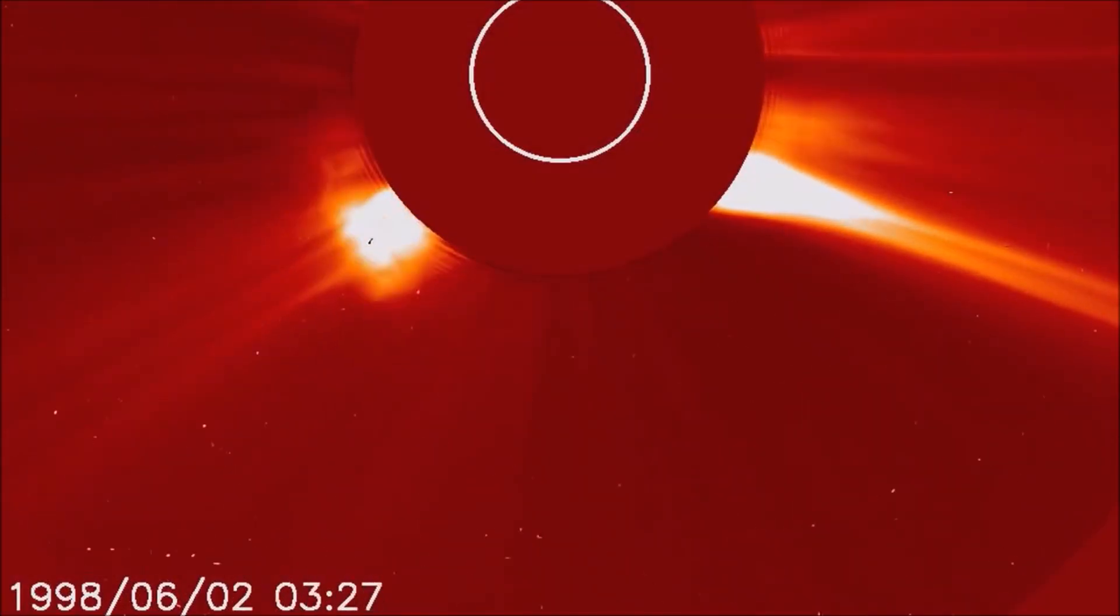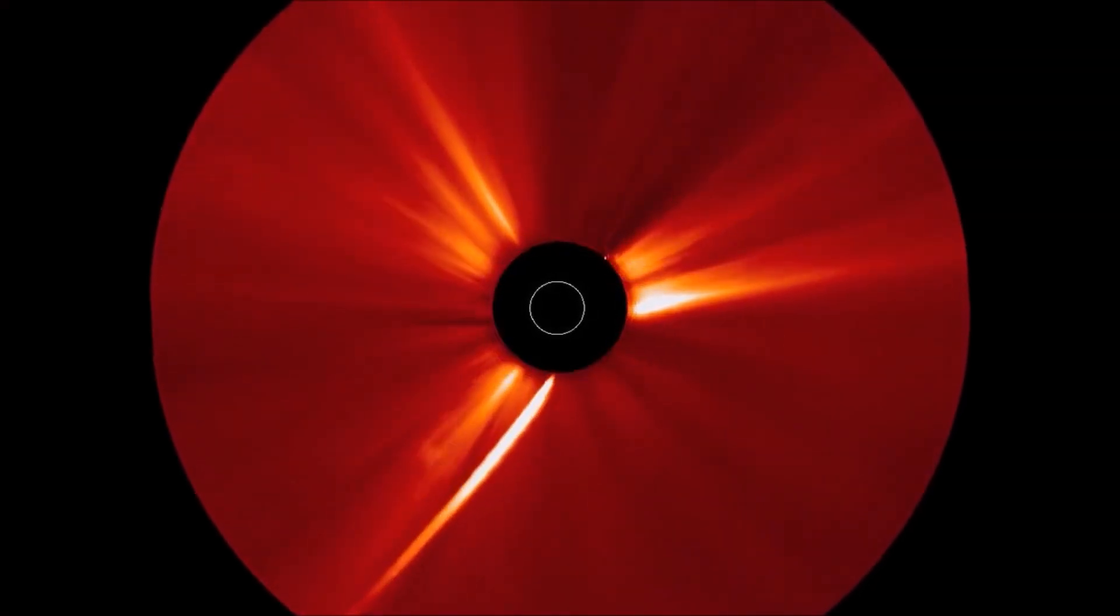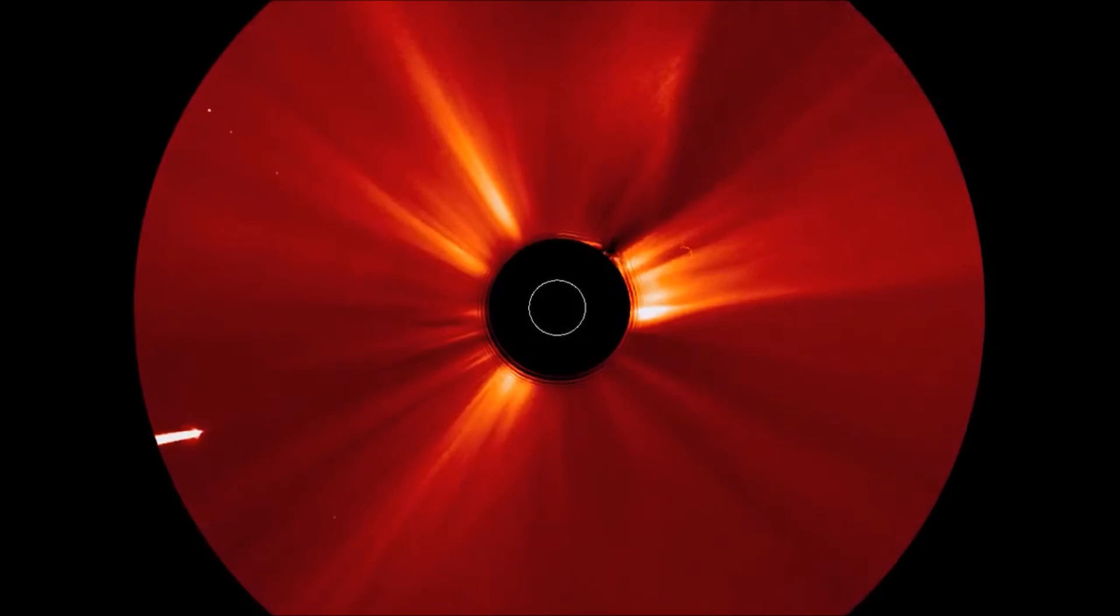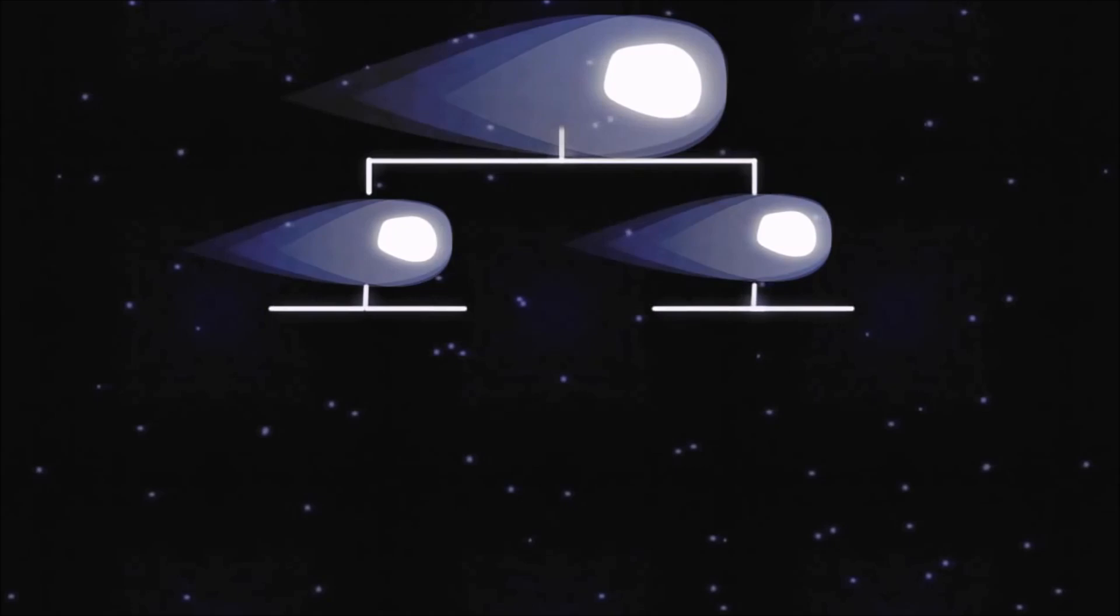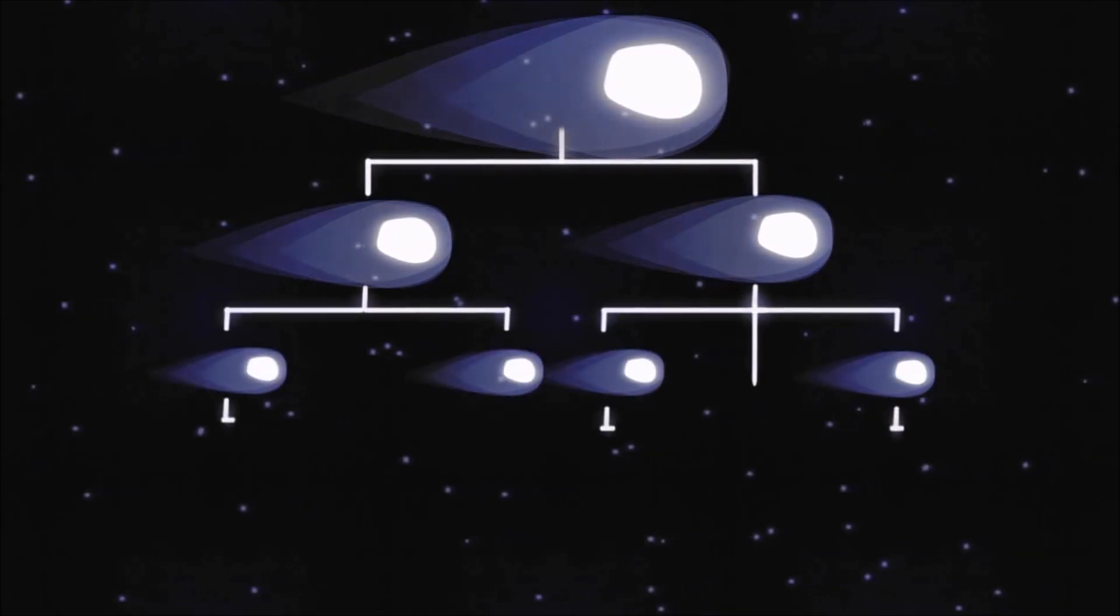Comets that pass extremely close to the sun are called sun-grazing comets. Some large sun-grazers survive to go around the sun over and over again. Other comets travel so close to the sun that they evaporate or break into fragments and are destroyed.